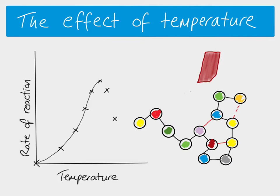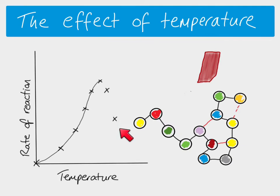Not all enzymes are going to be affected at exactly the same point. So if you increase the temperature past the optimum just a little bit, then some enzymes are going to start to denature, which means their active site may change a little bit — some enzymes may not — so we've still got quite a high rate of reaction. But as we go further, the effect on the active site gets bigger and more enzymes will be affected until all of the enzymes are completely denatured, and you have a rate of reaction of zero.